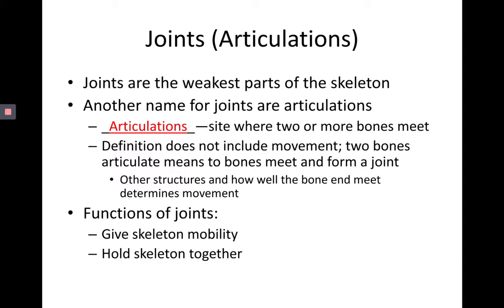This definition — saying articulations are where two or more bones meet — doesn't include movement. Just because two bones meet doesn't mean they form a particular type of joint or they're going to move a particular way. You have to add more terminology in order to talk about their functions, their mobility, and how different articulations are held together.